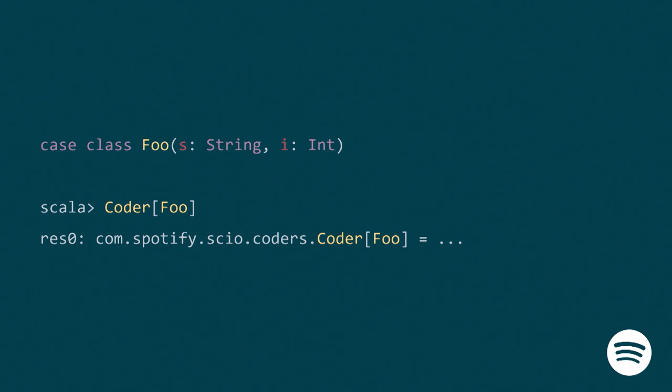Here's a small demo of what Scio is doing. Say you have a simple class Foo with a String and an Int. If you ask the compiler for an implicit Coder of Foo, the compiler will look into implicit scope. It's essentially asking the compiler: can you provide a Coder of Foo? And the compiler says yes — it derived it automatically. The compiler has the logic internally to generate a Coder of Foo because it knows how to serialize a String and an Integer, so obviously it knows how to serialize a product of String and Integer.